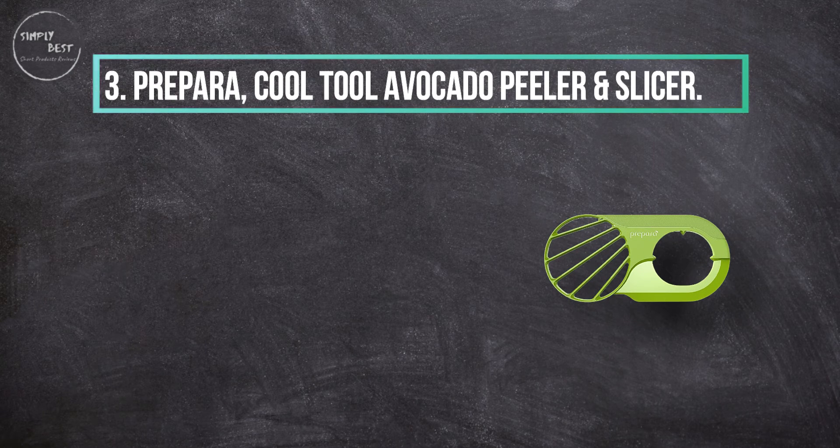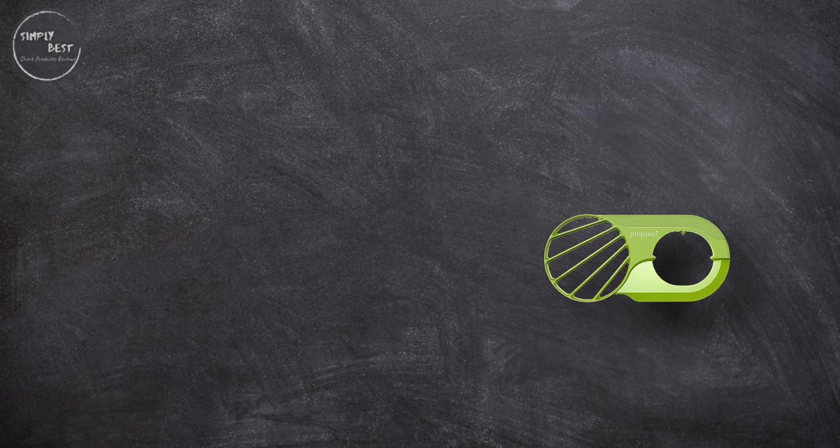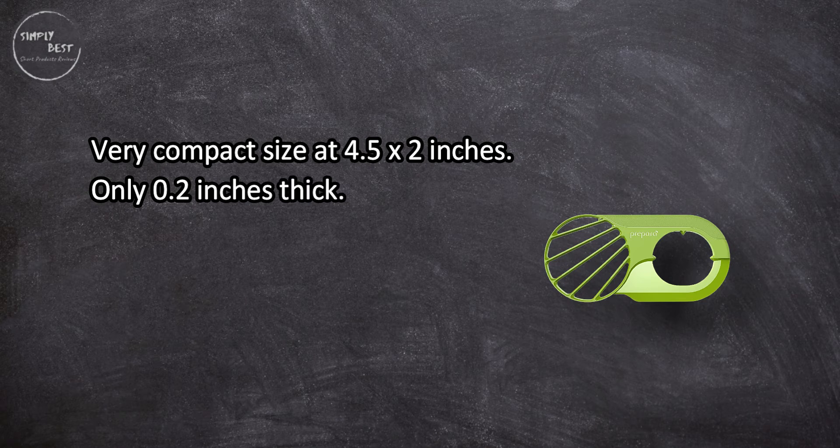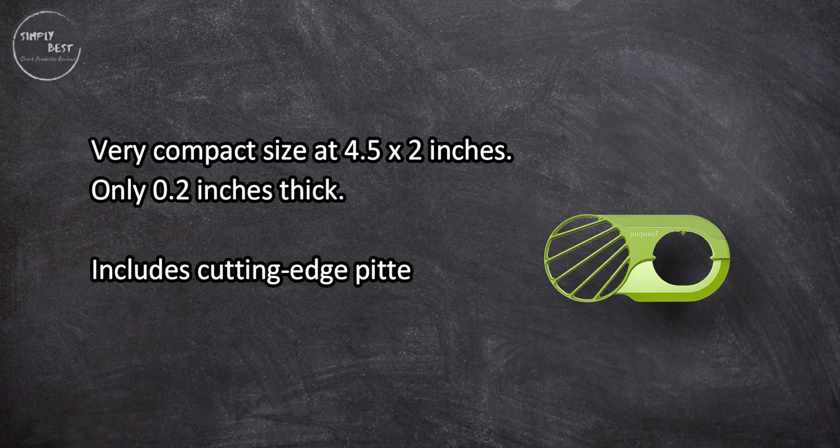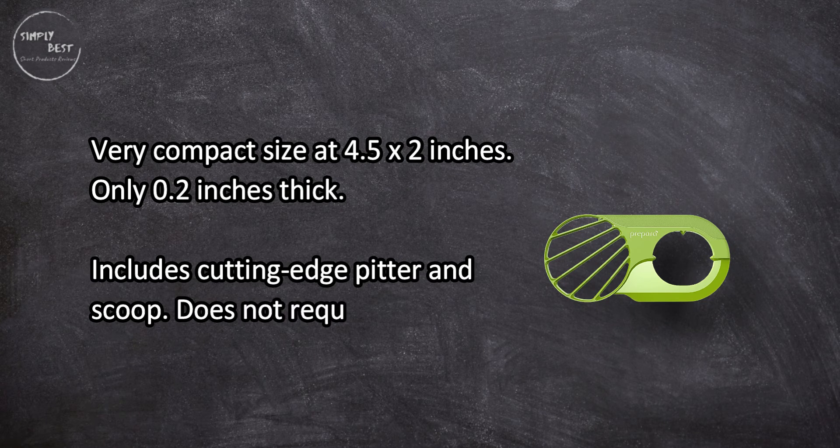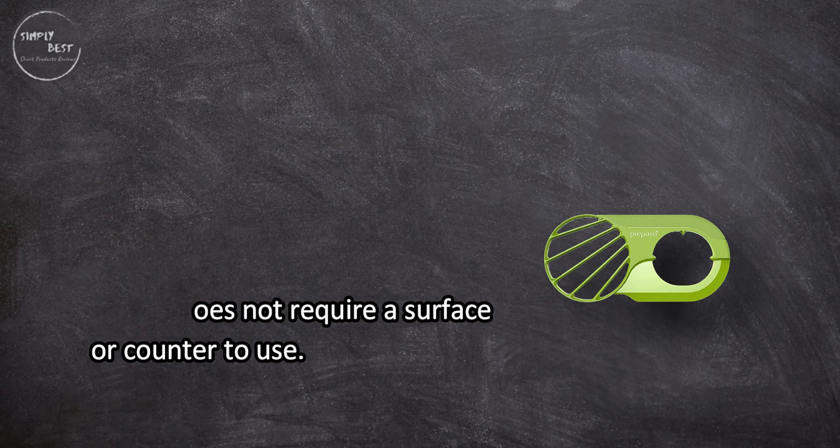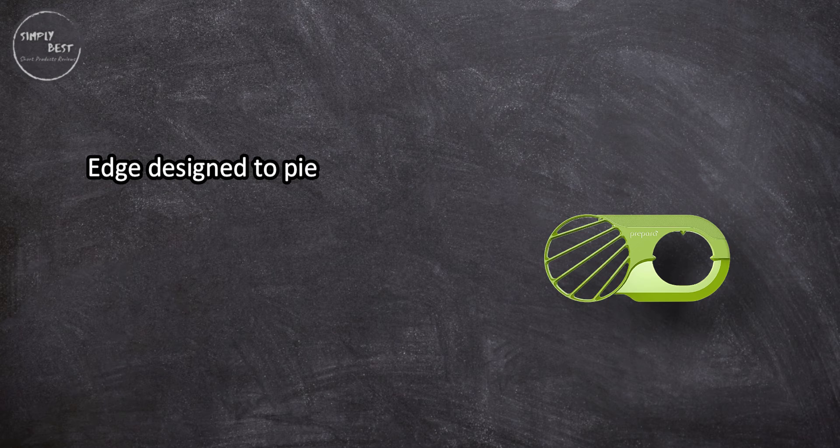At number three, Prepara Cool Tool avocado peeler and slicer. Very compact size at 4.5 by 2 inches, only 0.2 inches thick. Includes cutting edge, pitter, and scoop. Does not require a surface or counter to use. Edge design to pierce the vegetable skin yet remain safe to handle.